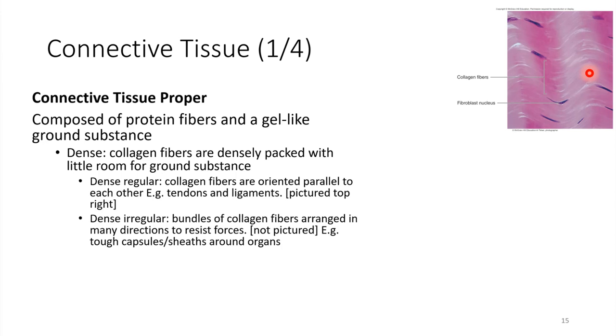We could also have dense irregular. Instead of the fibers running parallel, they could be arranged in different directions. That's not going to be quite as good at resisting forces, but it will still be very protective. That's the type of connective tissue that tends to form a sheath around organs. Think if you've ever cut up a chicken breast or something, that clear layer on the outside. That's connective tissue protecting everything underneath.